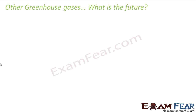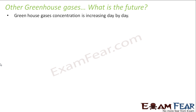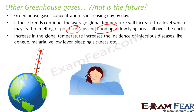So the question is, there are so many greenhouse gases, the temperature is increasing — what is the future? The greenhouse gas concentration is increasing day by day and the temperature of the earth as a whole is increasing. With that, the polar ice caps are melting and flooding the low-lying areas. Coastal areas are going under water — for example, Dwarka is a place in India which is now underwater because of this. The sea level has increased. Also, increasing global temperature causes a lot of diseases — for example, Dengue, Malaria, Yellow Fever, and Sleeping Sickness.